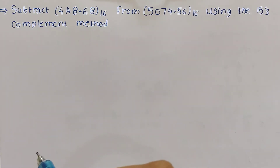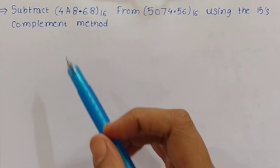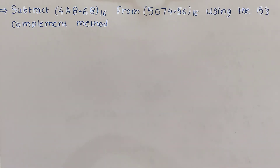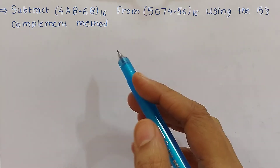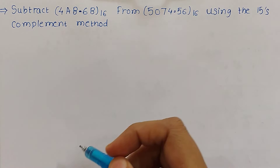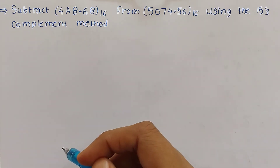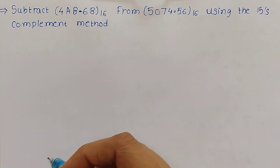Here we will discuss the subtraction using 15's complement for hexadecimal numbers. The first question is: subtract 4AB.6B (hexadecimal) from 5074.56 (hexadecimal) using the 15's complement method.